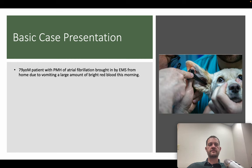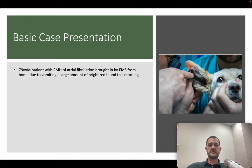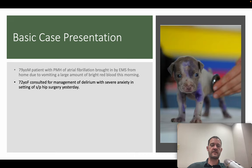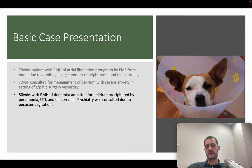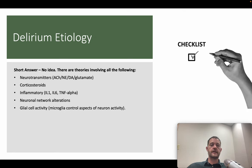Three case examples of real consults: a 79-year-old male with a history of AFib brought in by EMS for vomiting large amounts of bright red blood presenting with delirium; a 72-year-old female consulted for management of delirium with severe anxiety status post hip surgery the day prior; and an 80-year-old man with a past history of dementia admitted for delirium precipitated by pneumonia, UTI, and bacteremia — psychiatry consulted for persistent agitation.